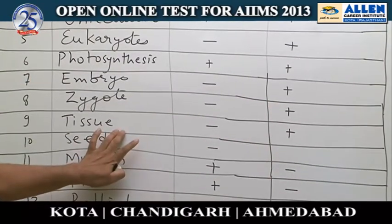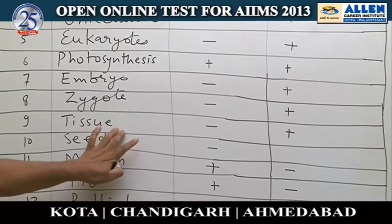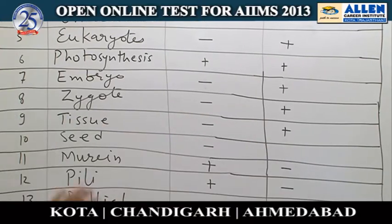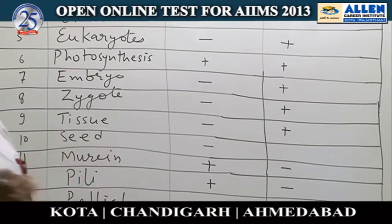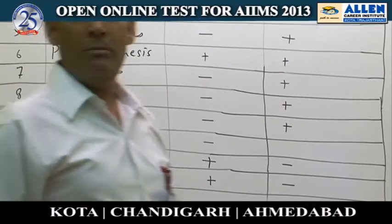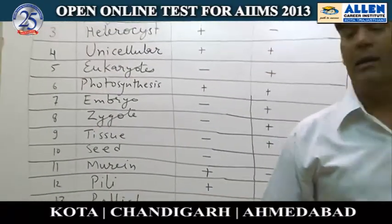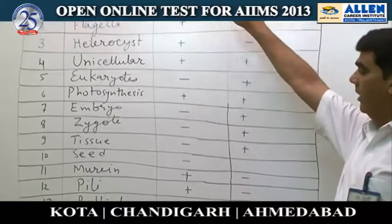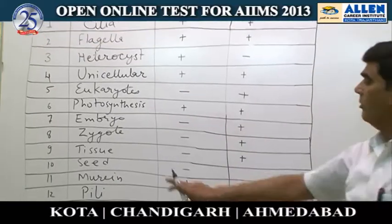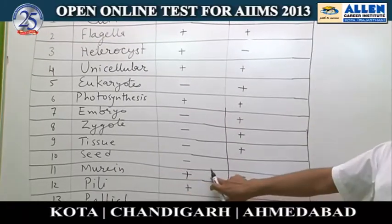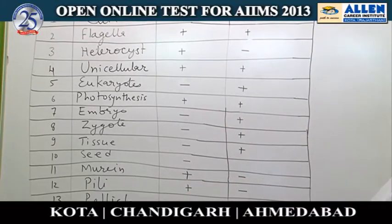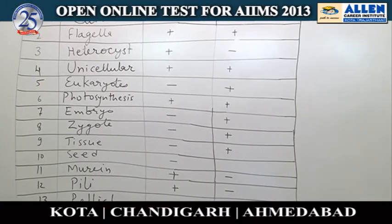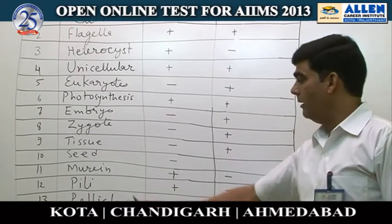Murine is a very important compound present in the cell wall of bacteria, and bacteria are the members of Monera. Murine is not present in any kingdom other than Monera.